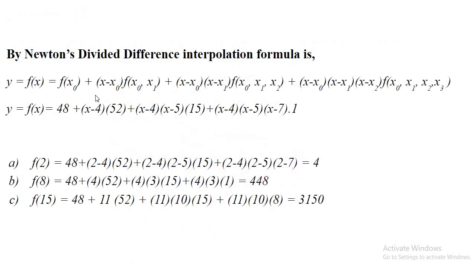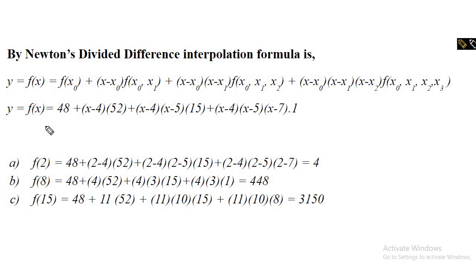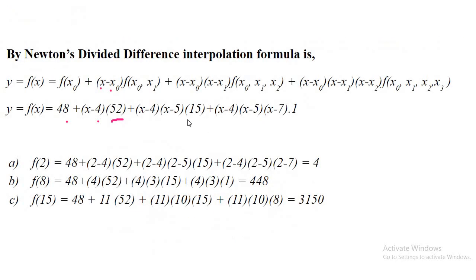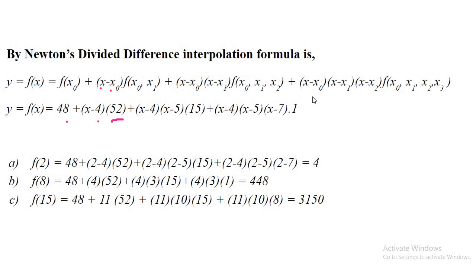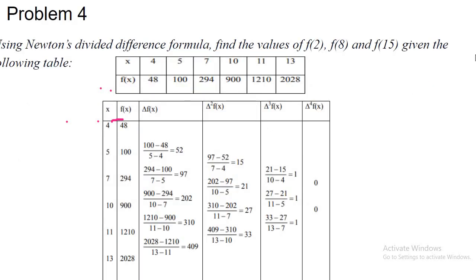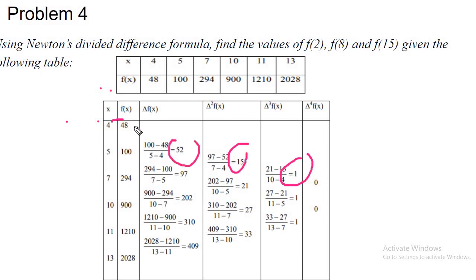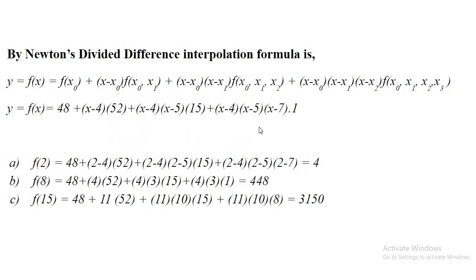Now the next part is to write the polynomial using the divided difference formula. f(x0) is 48. Then (x minus x0), starting with x0 = 4, and the divided difference coefficient is 52. Then (x minus 4)(x minus 5) with divided difference 15. And the last term is (x minus 4)(x minus 5)(x minus 7) with coefficient 1. This is the polynomial. Now put in x = 2, x = 8, and x = 15 to get the function values.